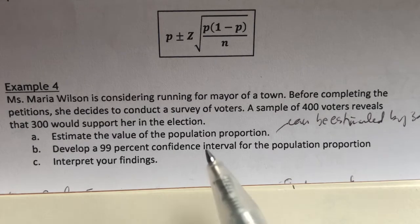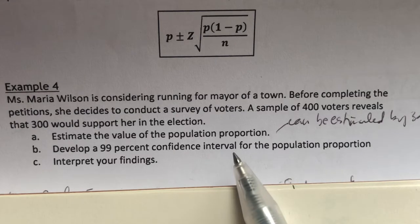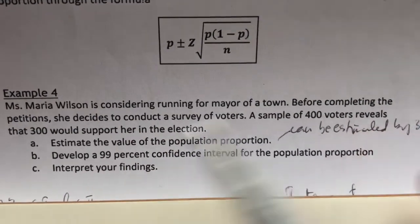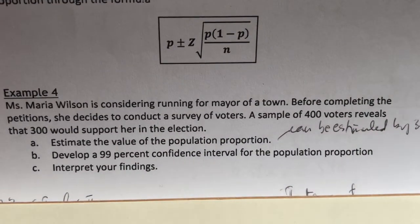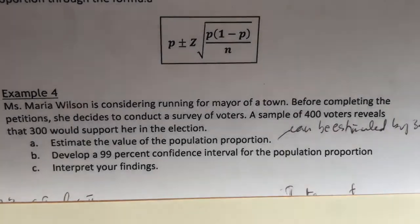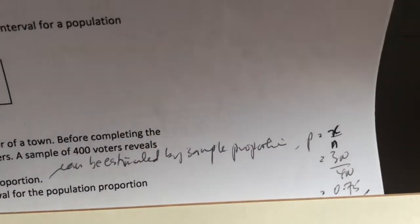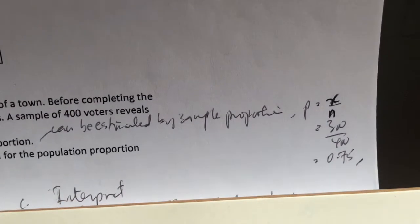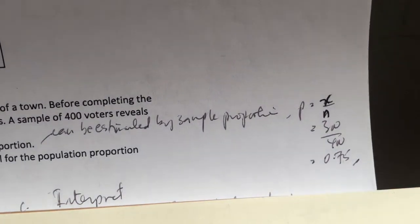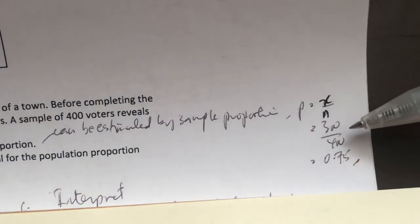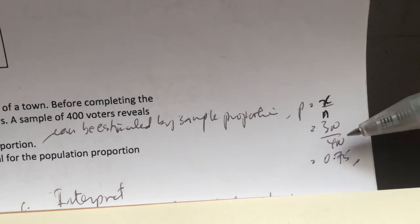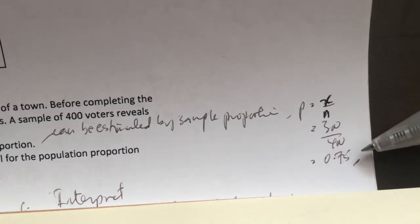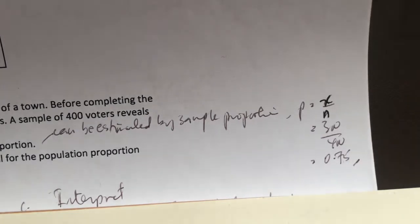We can say that the population proportion is not known. However, the best estimate of the population proportion is the sample proportion, which can be estimated from this formula: p equals x over n. In our case, the number of people willing to vote for her is 300 over the sample size of 400. So our p, or sample proportion, is 0.75.